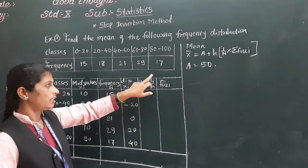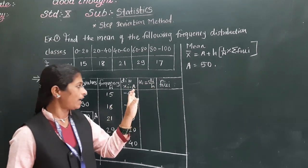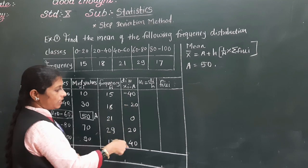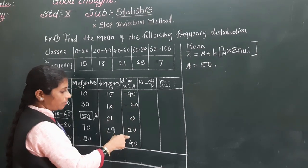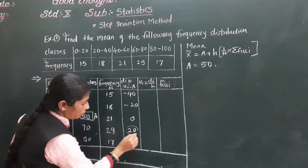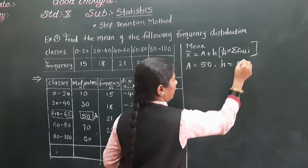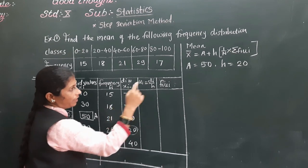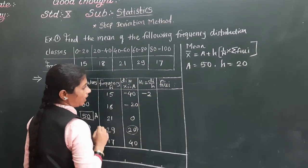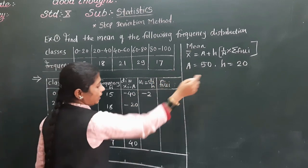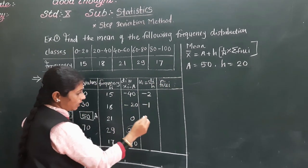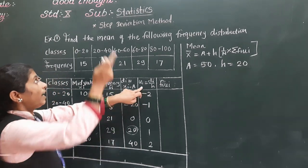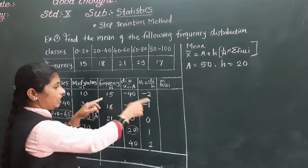The next column is ui, which equals di divided by h. Yesterday we learnt that h is the common factor of all di values — the number that can divide all of them. Looking at the di values minus 40, minus 20, 0, 20, 40, the common factor is 20. So h equals 20. Now: minus 40 divided by 20 equals minus 2; minus 20 divided by 20 equals minus 1; 0 divided by 20 equals 0; 20 divided by 20 equals 1; and 40 divided by 20 equals 2.